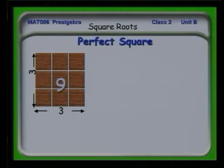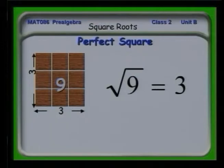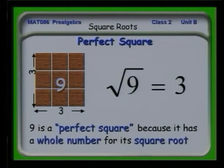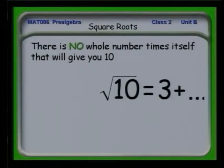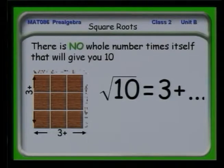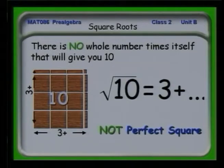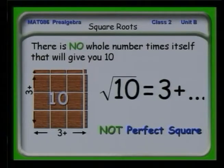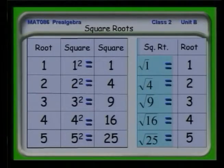A perfect square is something that gives you an even square root. For example, if you have 9 things, the square root is 3, and it fits exactly because it has a whole number for its square root. Now suppose we wanted to find the square root of 10. That's 3 by 3, which is 9, so we'd have to add a little bit. 10 is not a perfect square because its square root is not a whole number. A perfect square is a number where, when you take the square root, you get a whole number — it fits perfectly.